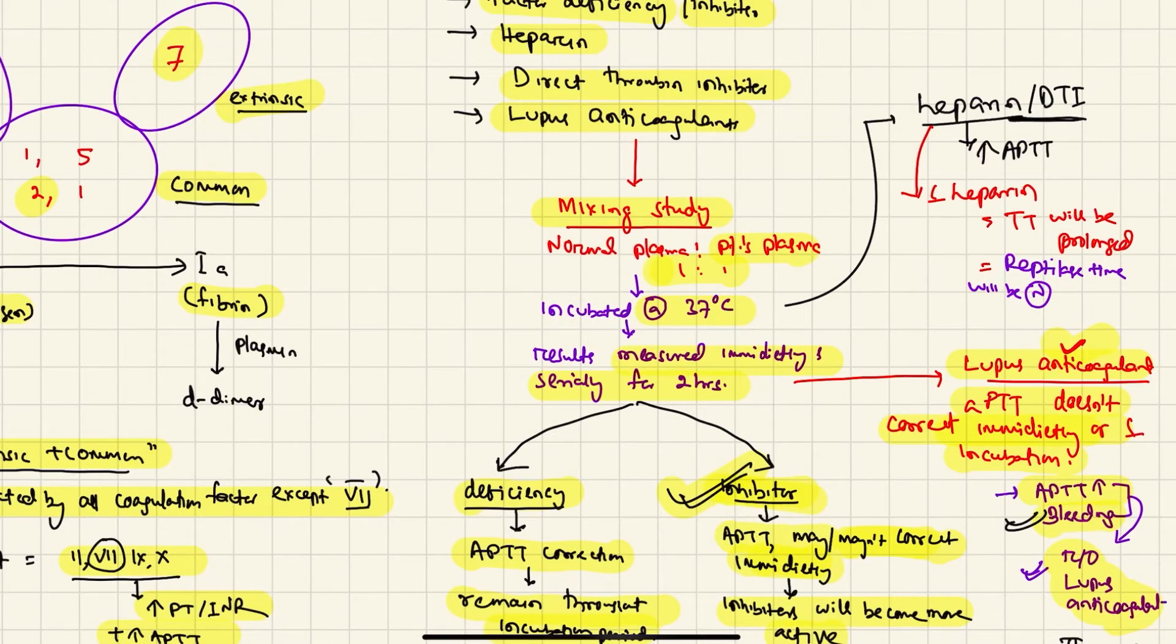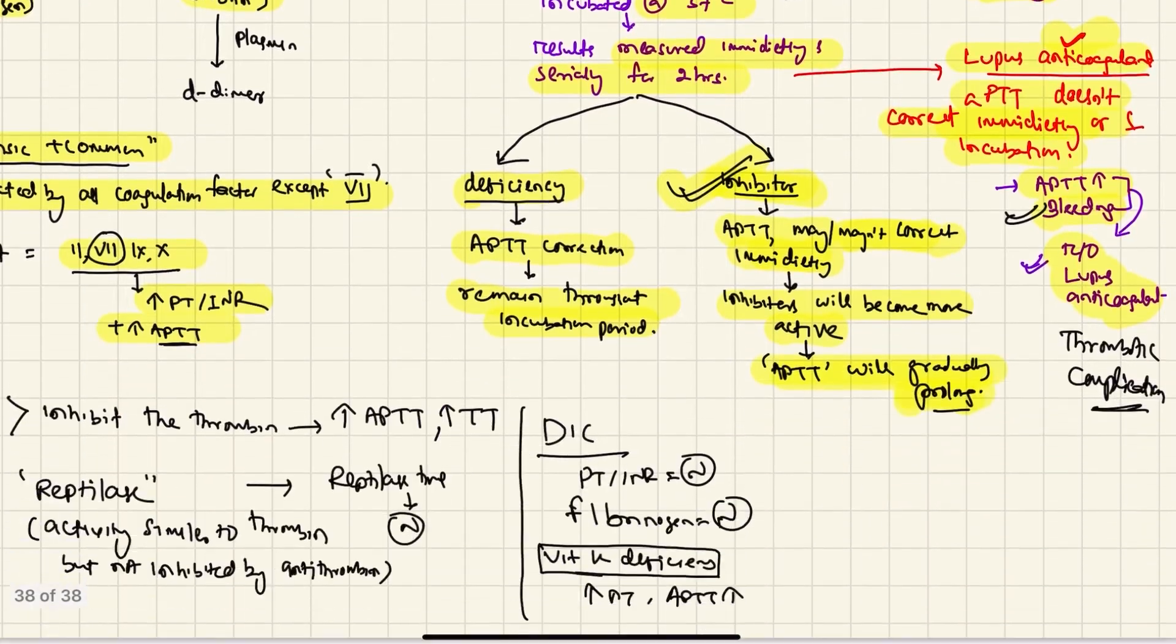Because our patient presented with bleeding complication, it rules out virtually any kind of lupus anticoagulant. What about heparin? Heparin can also cause increase in aPTT, but in case of heparin the thrombin time will also be increased, and the reptilase time will be normal. In our case, both thrombin time and reptilase time are normal.